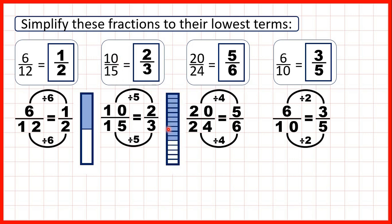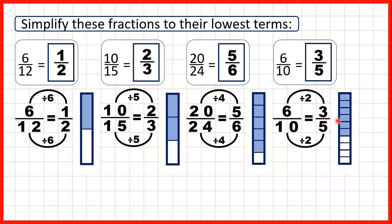So then we had 10 fifteenths, but we saw that that could be simplified to 2 thirds. Then 20 over 24 can simplify to 5 sixths, and 6 tenths can simplify to 3 fifths. So what we're doing when we simplify fractions isn't changing the size of the fraction. So though the numbers are smaller, when we simplify a fraction, the fraction is the same size.